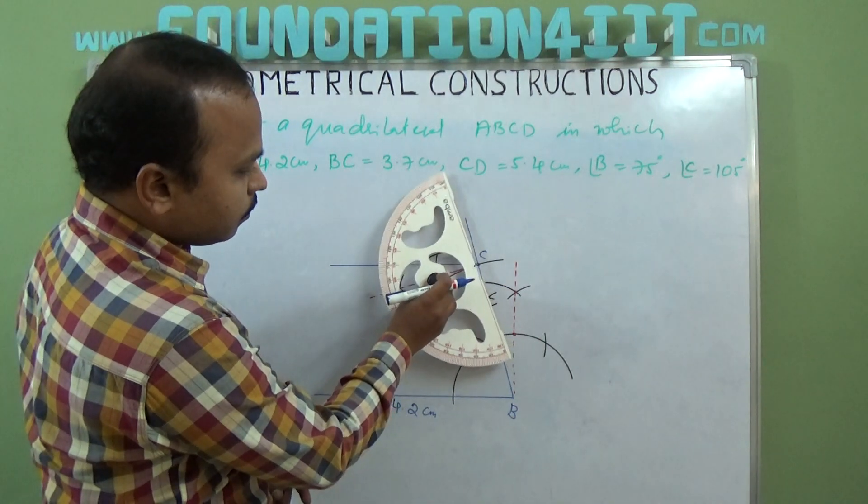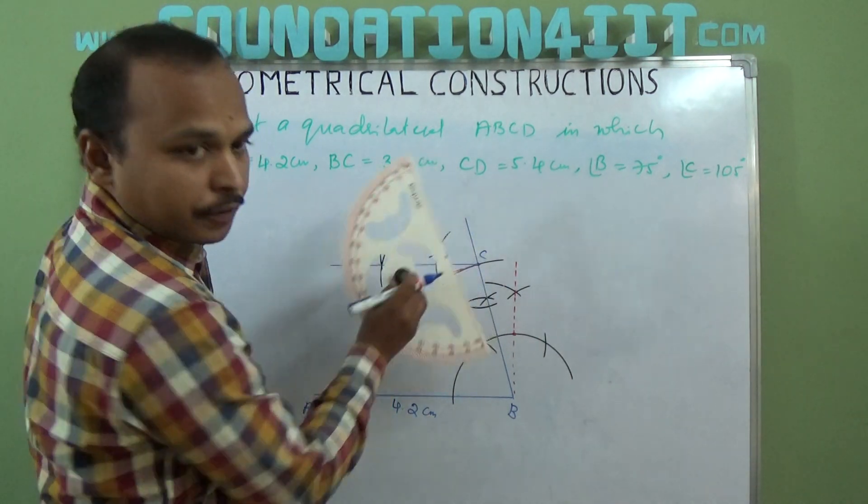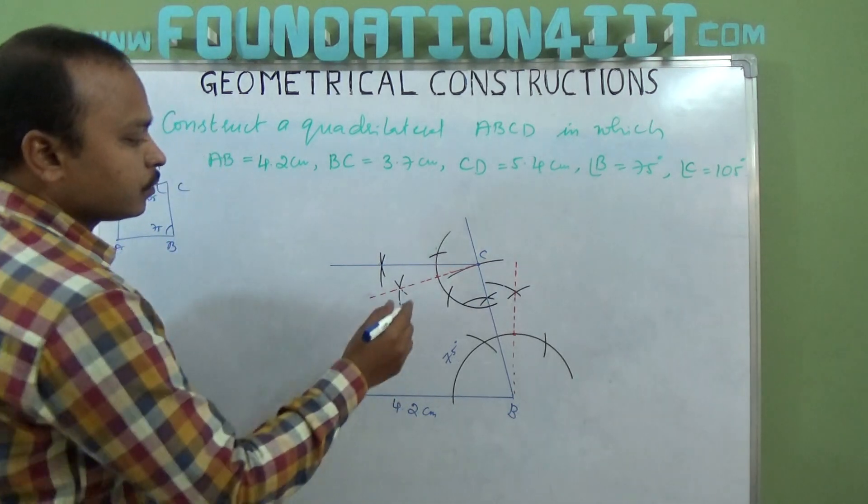So angle C is 105 degrees. With protractor also you can verify. So this is 75 and this should be 105. If you take the base exactly right, now this is 105 degrees.